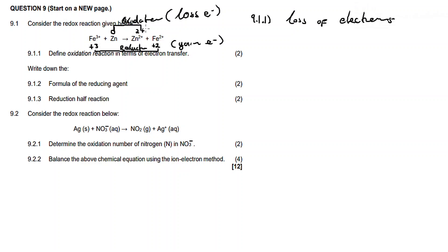Zinc went from zero to +2 — it had a neutral charge, then became +2, meaning it lost electrons and became positive. Iron went from +3 to +2, gaining an electron. Question 9.1.2: the reducing agent is the substance undergoing oxidation, which is zinc — so the reducing agent is zinc.